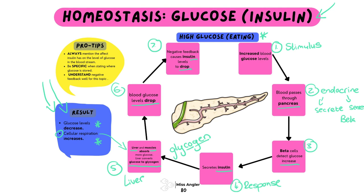In order to get full marks, always look at the pro tip bubbles — these are tips curated based off of final matric exams. Always mention the effect insulin has on the glucose level in the bloodstream; you must always say it's decreasing or increasing it. You must always be specific when stating where glucose is stored — a lot of pupils just say 'glucose is stored' and wonder why they don't get the mark. You must show your depth of understanding: it's stored in the liver and the muscles. Lastly, we must understand negative feedback very well for this topic.